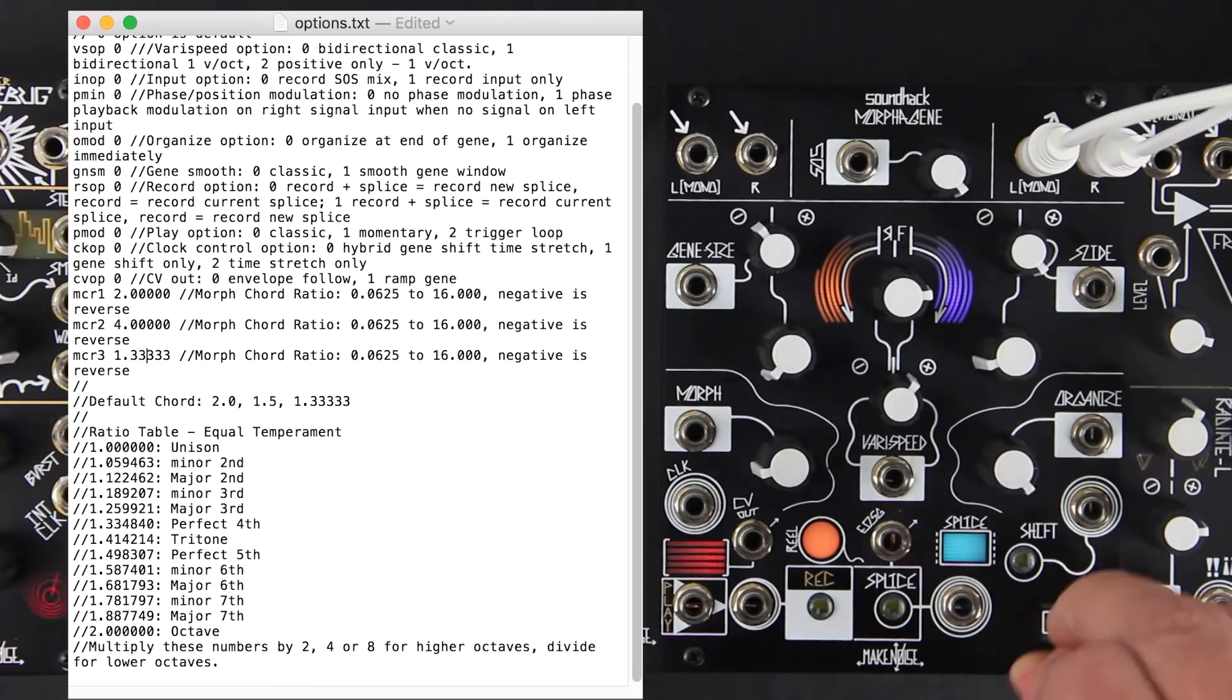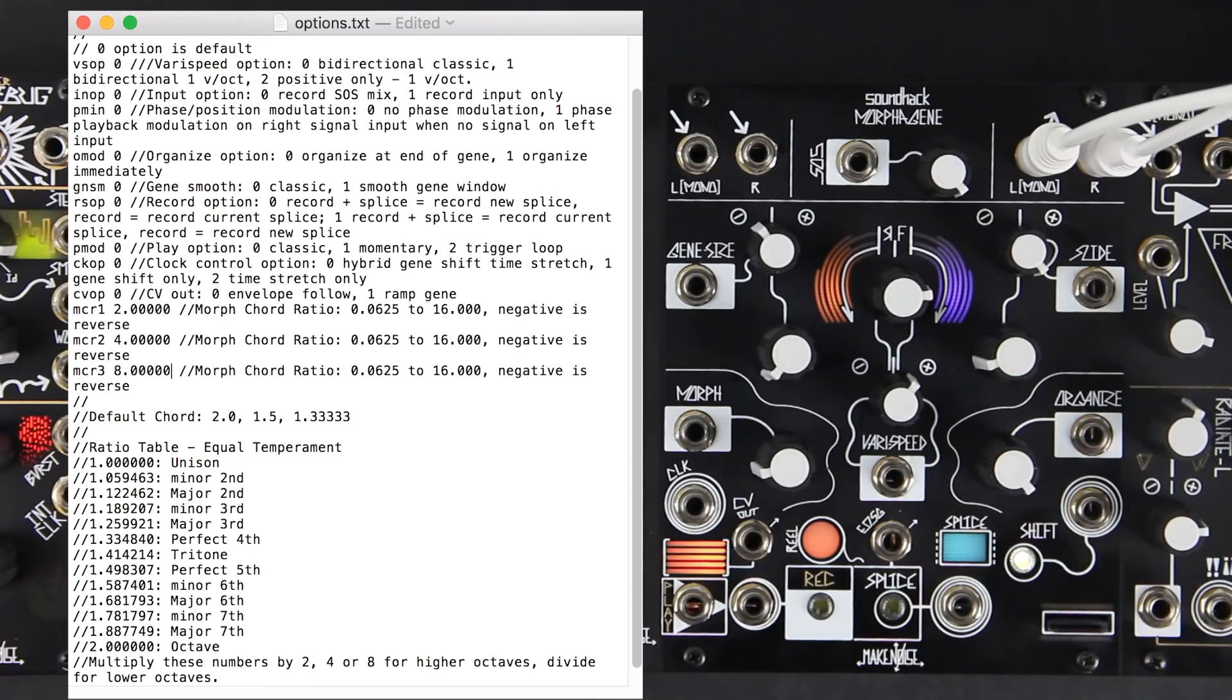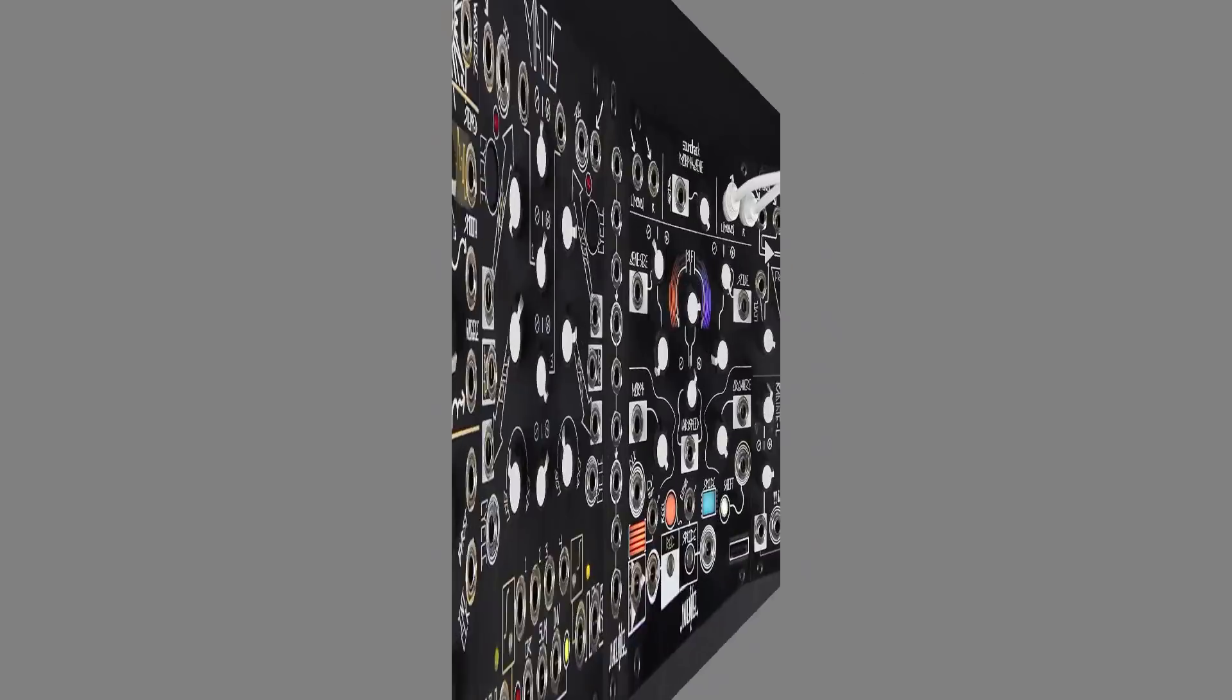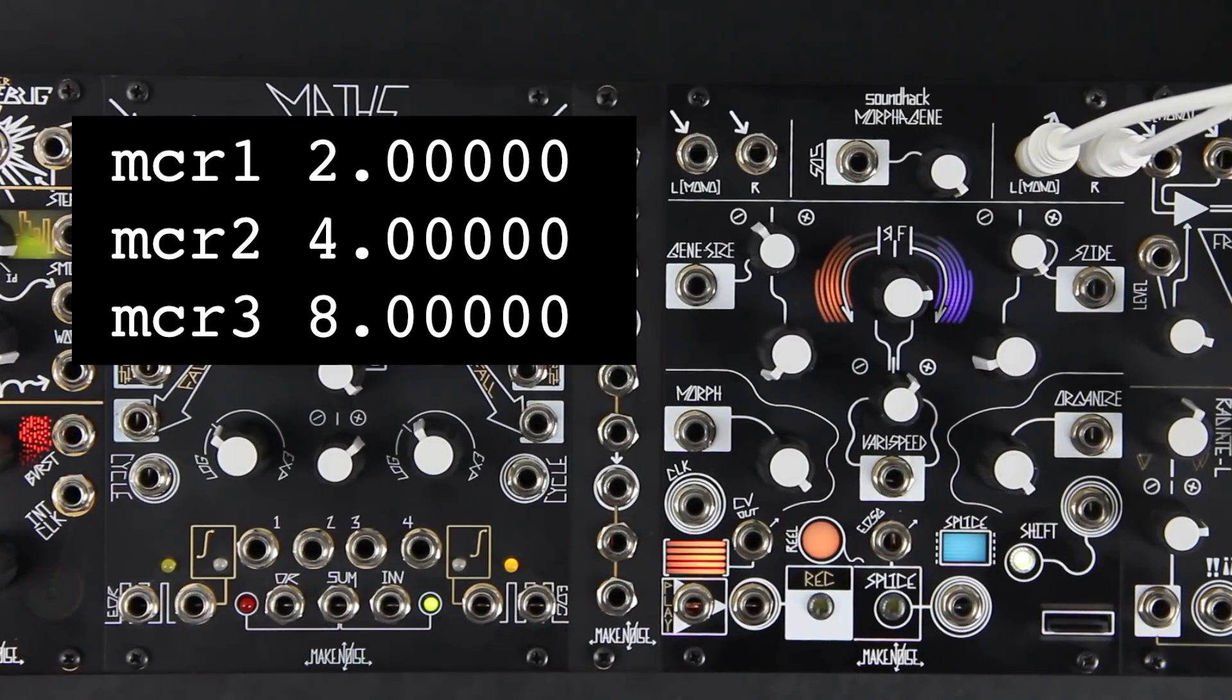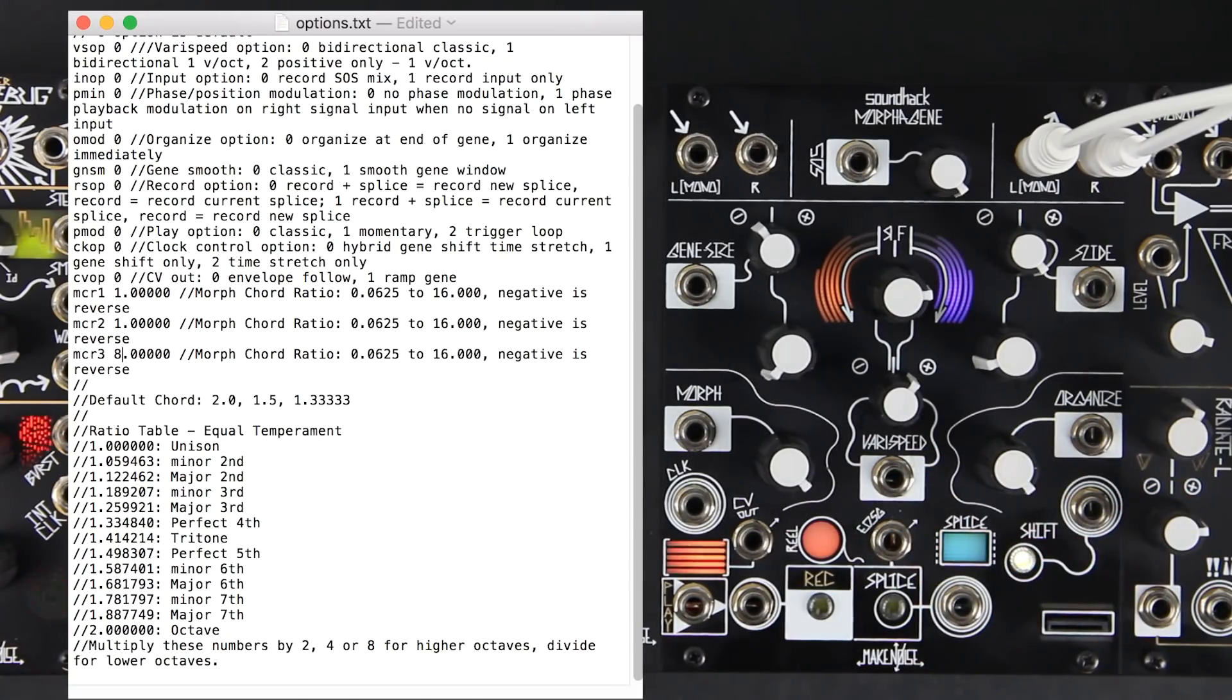Doubling the frequency with a ratio of two pitches it up by an octave, quadrupling it takes it up by two octaves, etc. A value of one does not change it from the original frequency. If we set them all to one, then they will not change.